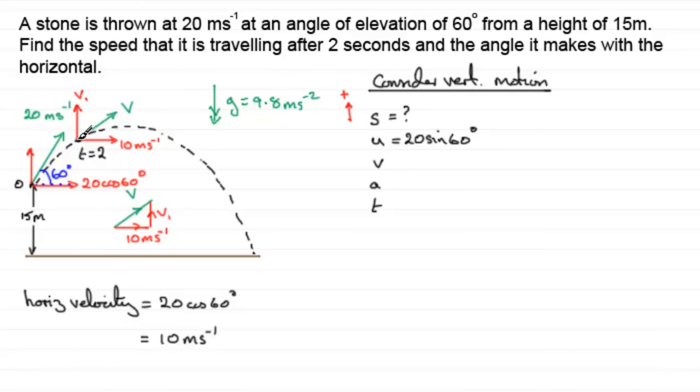We need v, the final velocity when t equals 2. I called it v1. So we'll just mark that in as v1. The acceleration is downwards. So it's acting in the opposite sense here. So that's going to be minus the acceleration due to gravity, minus 9.8 meters per second per second. And t is 2.